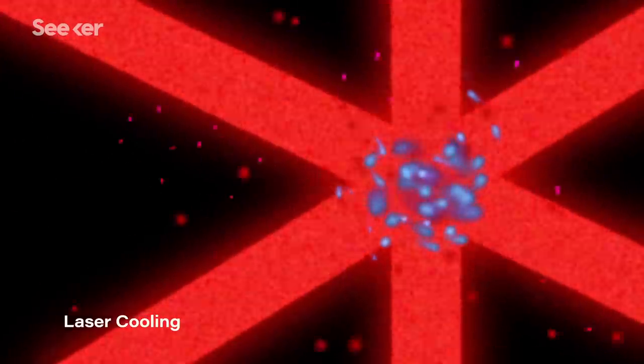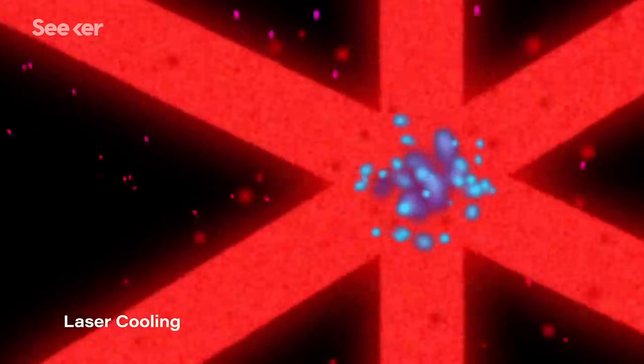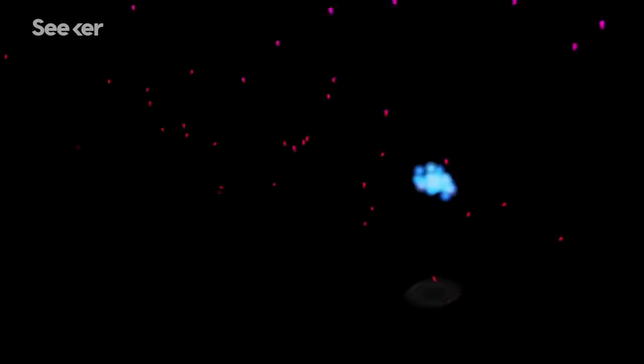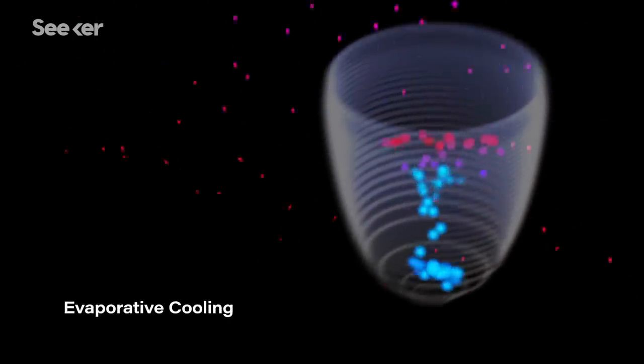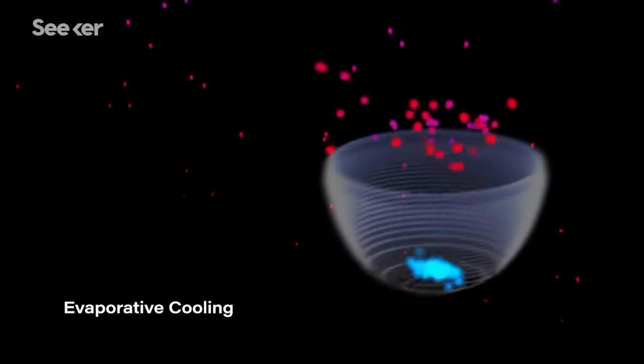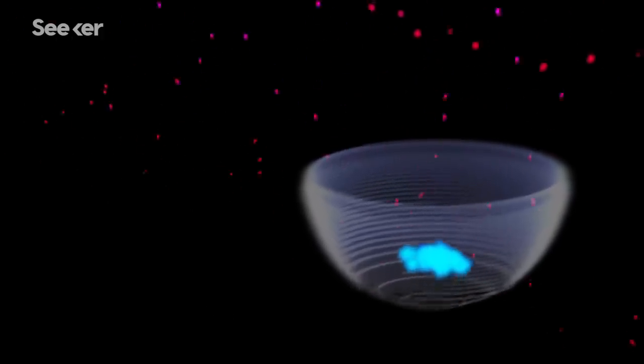Then in the 90s, people started developing these techniques to move those atoms into magnetic traps and then use this other technique called evaporative cooling to get to still colder temperatures. Evaporation relies on losing atoms. You need atoms to go away to get out of the trap and carry energy with them.